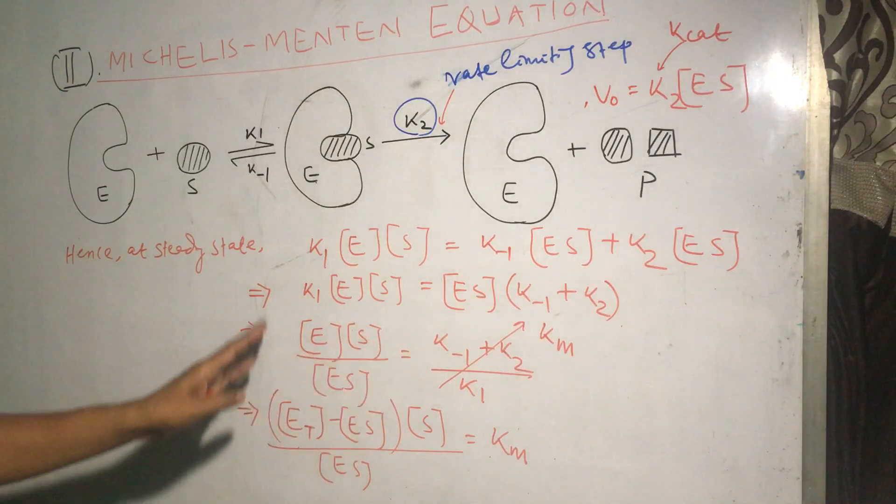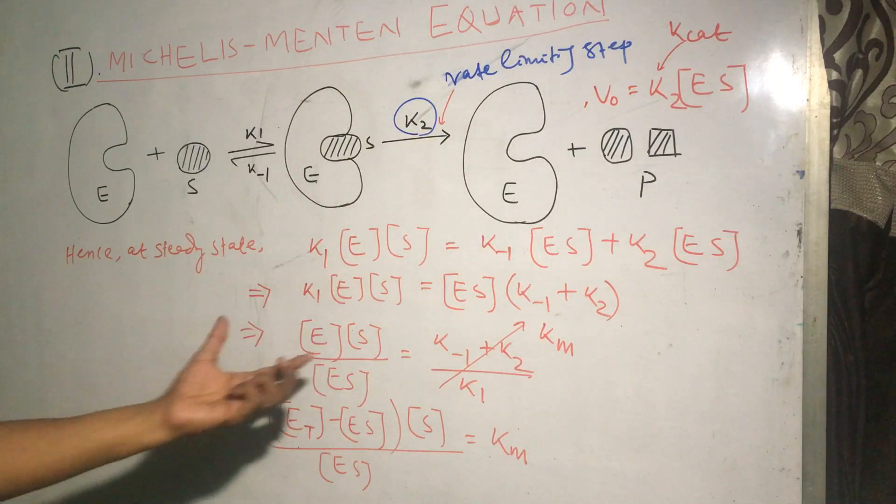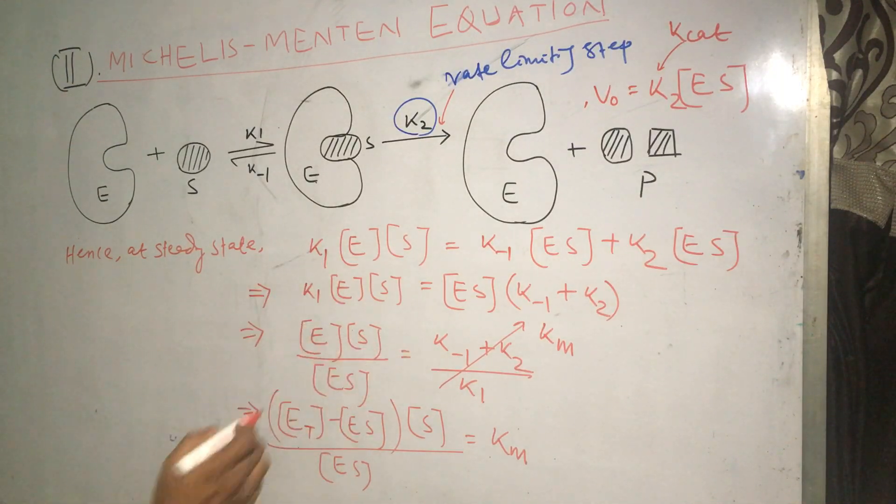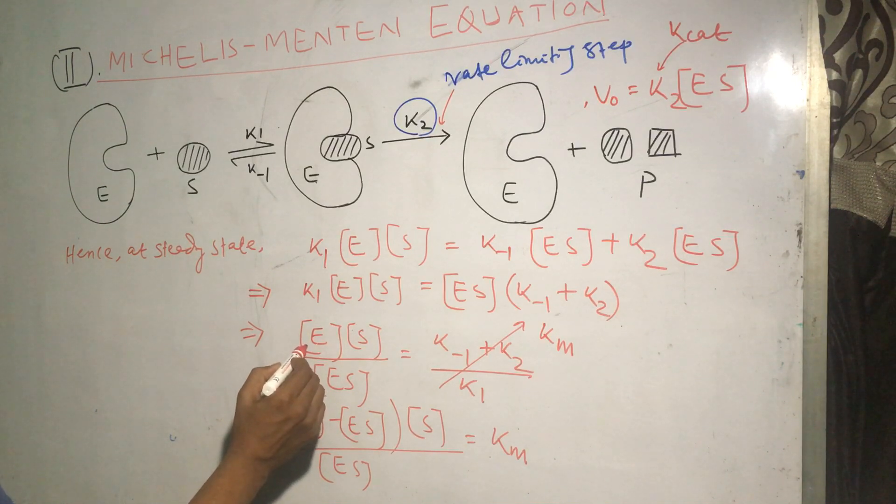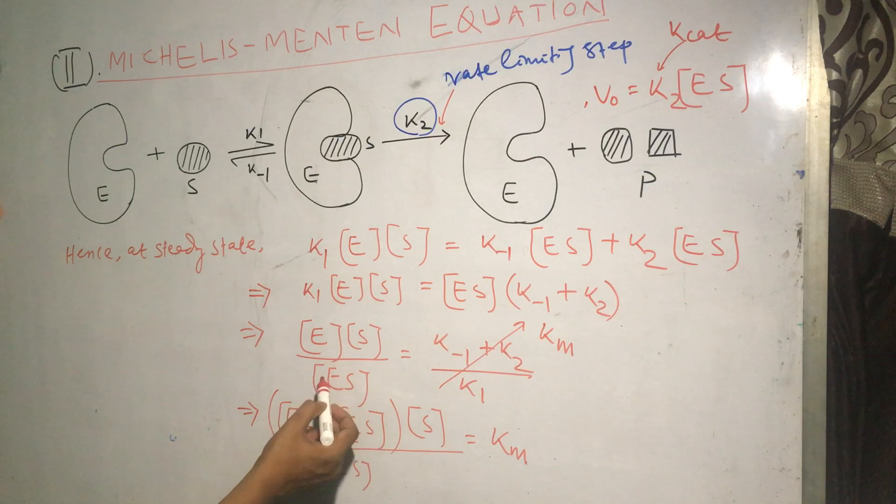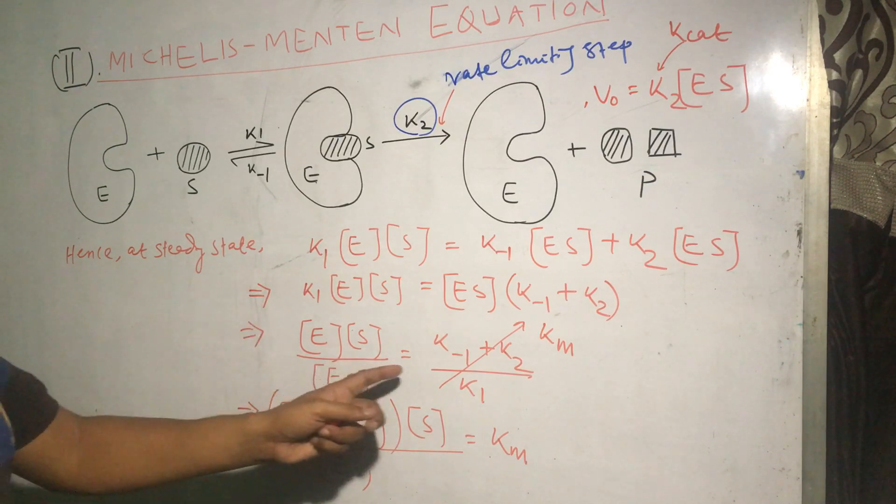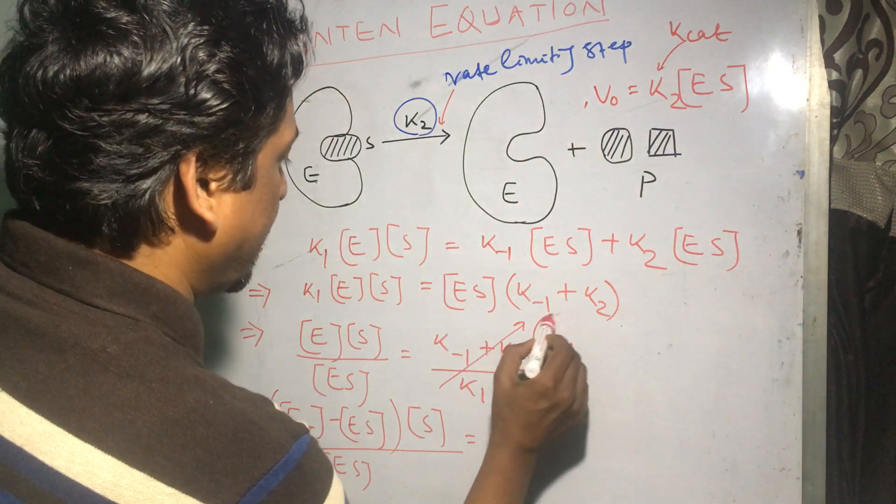Just the rearrangement of this equation gives us this value. The concentration of enzyme, the free enzyme, times the concentration of substrate divided by ES complex is equal to the Michaelis constant.